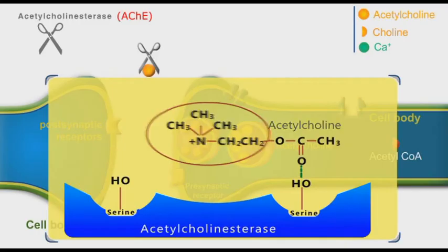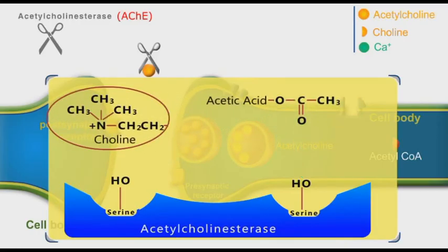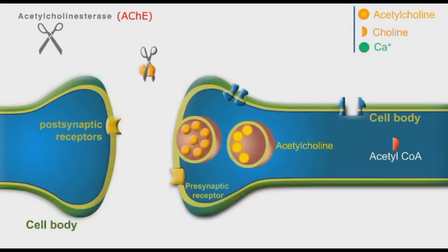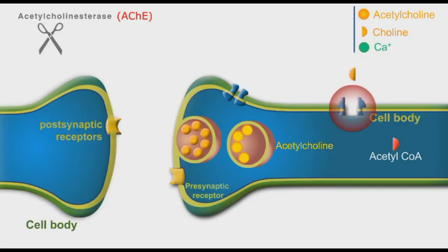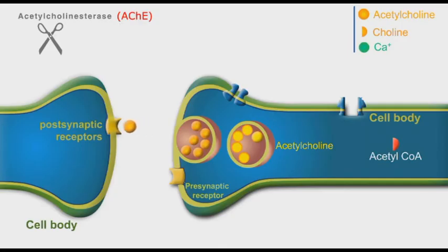AChE cleaves acetylcholine into choline and acetic acid molecules. The choline molecules are reuptaken by choline transporters in the presynaptic neuronal membrane. Inside the neuron, choline binds to acetyl groups to form new acetylcholine molecules, which are then stored in storage vesicles until new releasing signals arrive.